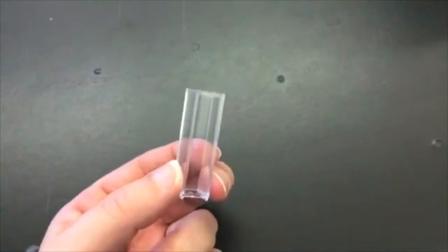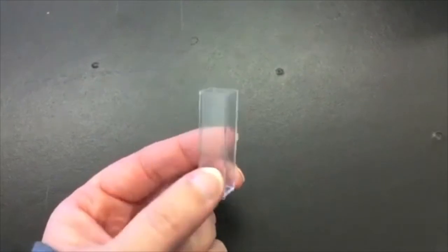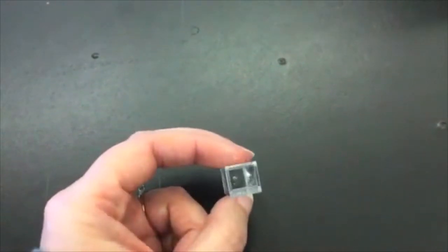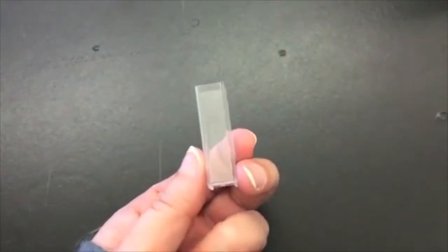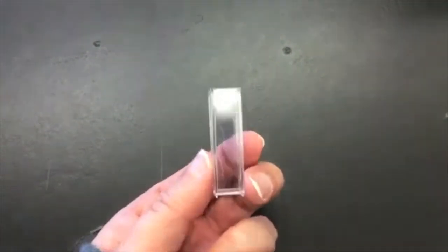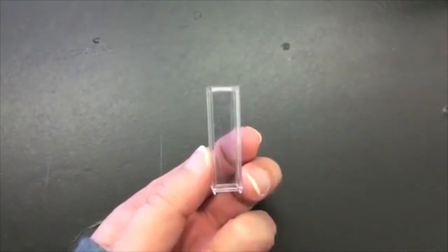These cuvettes are a little different than the cuvettes we have used in other labs. You will notice first they are square. There is a side that has ribbing on it and a side that is smooth. We want to avoid touching the smooth side because this is the side that light will pass through.